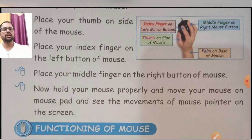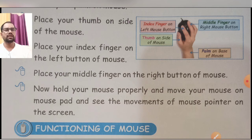And this is your middle finger. To kya karna hai — index finger rakhna hai. Then place your middle finger on the right button of the mouse. Now hold the mouse properly and move your mouse on the mouse pad and see the movements of the mouse pointer on the screen. Proper kya karna hai: apna jo mouse hai uske par humne hand rakha hai, rakhne ke baad thumb ko side me rakhna hai, index finger ko left mouse button pe rakhna hai, then right ko opposite direction me rakhna hai, scroll bhi kar sakte hai apni middle finger se.